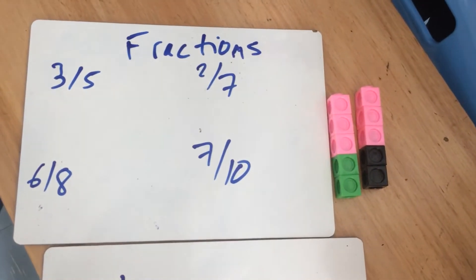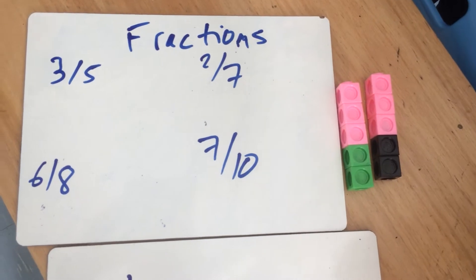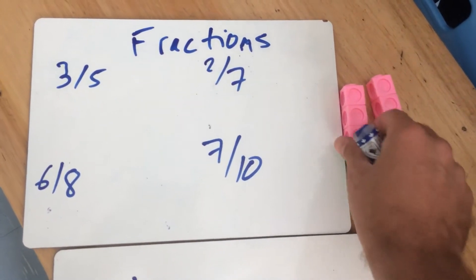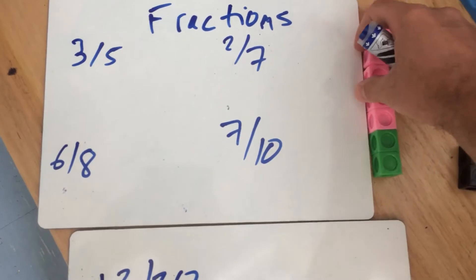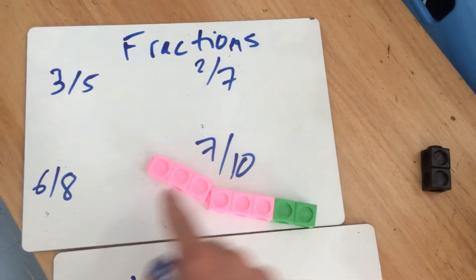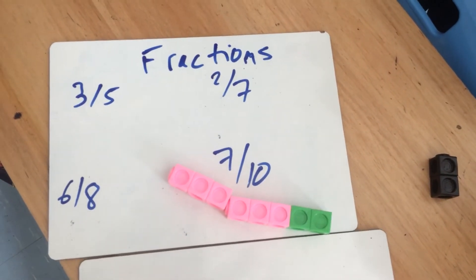Can I see six eighths, please? We can make those quickly. I could just break those up, and that there would be six out of eight. There's something special about six out of eight.